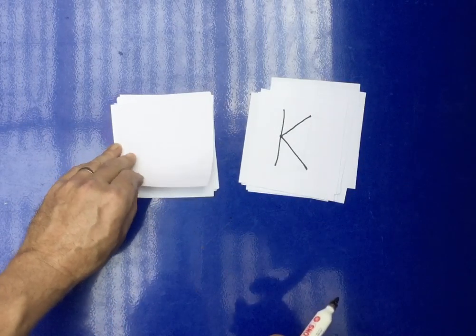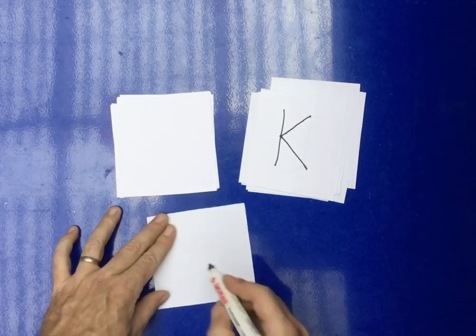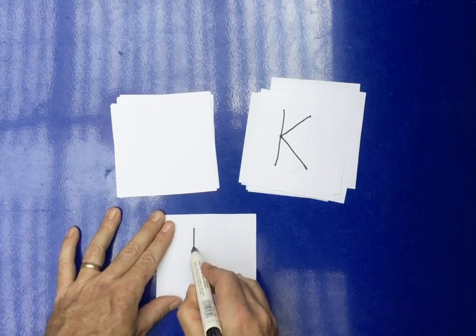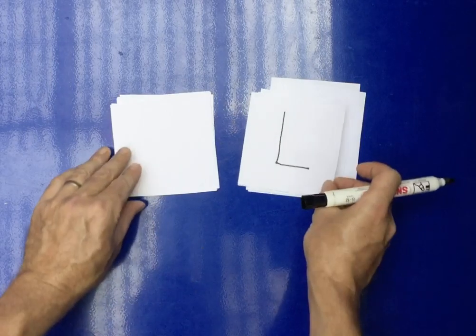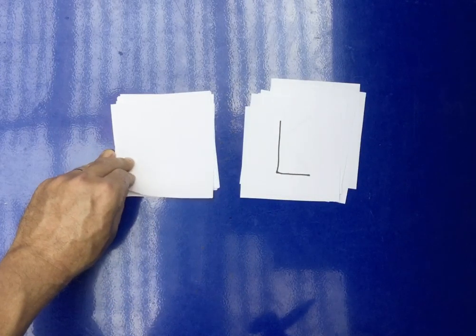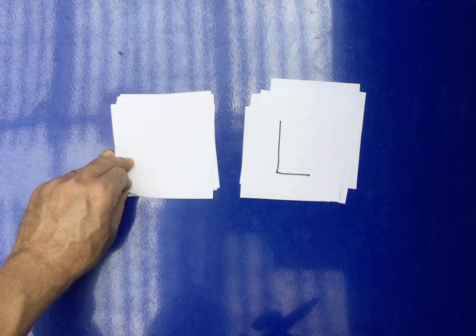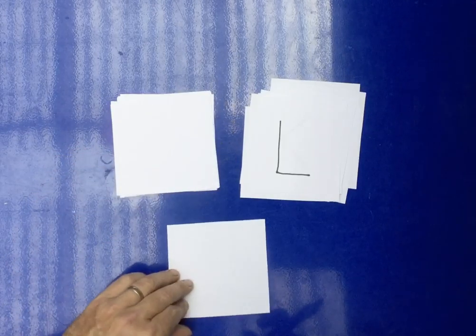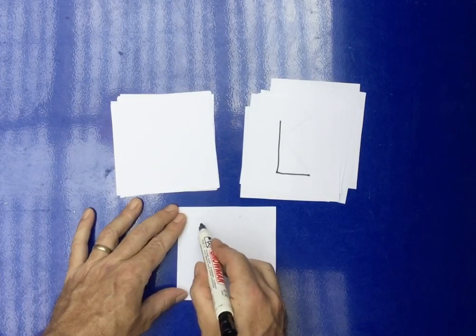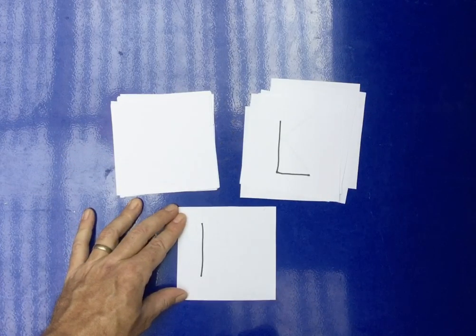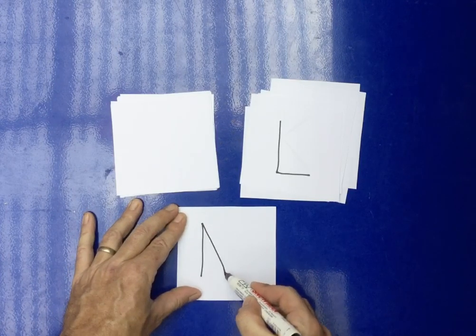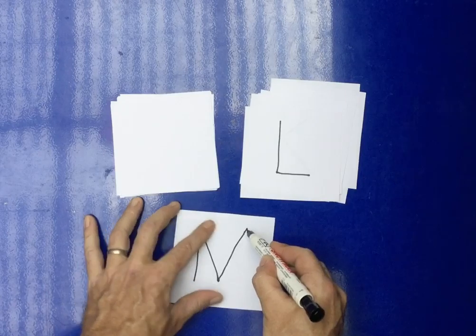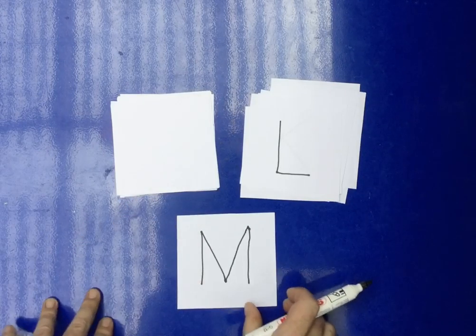What's after the K? It's the L. So the L, we go down and like that. H, I, J, K, L, M. To make the M, we start up, we go down, then we go back up again, we go down, up, down.